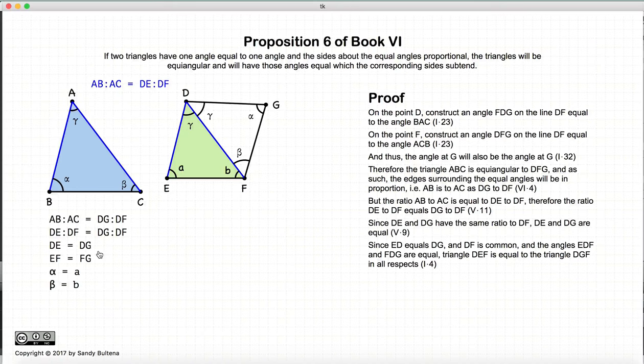Similarly, using exact same logic, we can prove that EF is equal to FG. I'm not going through all the details, but it works out exactly the same way. So we have that DE is equal to DG and EF is equal to FG.